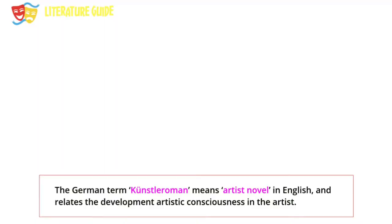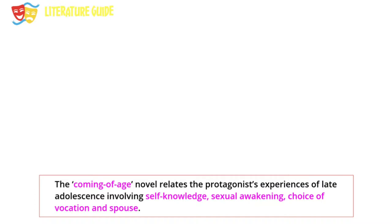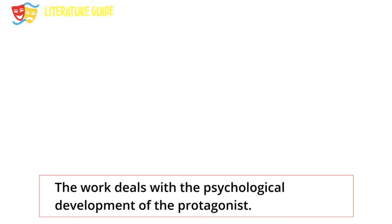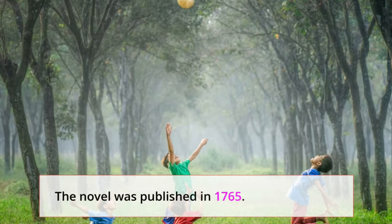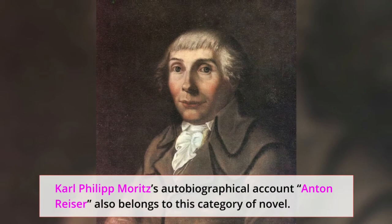The German term Künstlerroman means artist novel in English and relates the development of artistic consciousness in the artist. The coming-of-age novel relates the protagonist's experiences of late adolescence involving self-knowledge, sexual awakening, and choice of vocation and spouse. The earliest example of the Bildungsroman is the History of Agathon by Christoph Martin Wieland, which deals with the psychological development of the protagonist. The hero goes through many bitter experiences and finally learns the lesson of his life. The novel was published in 1765.